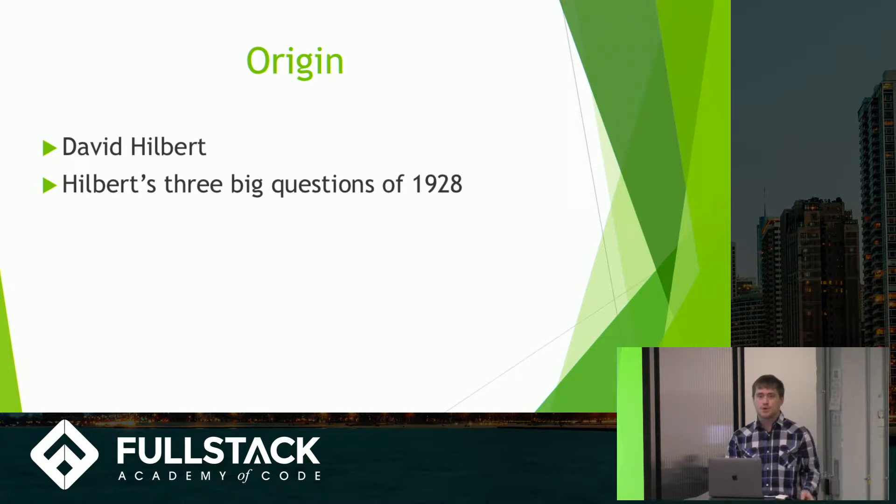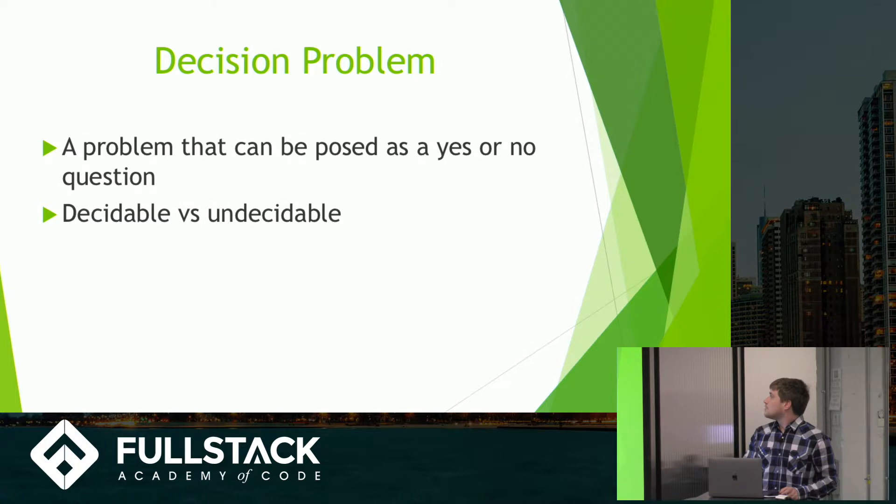And once he asked this problem, a bunch of mathematicians basically started to try and make tools that could solve this problem. So what is a decision problem? A decision problem is basically a problem that takes in inputs and then either responds with yes or no. And it's as simple as that. And if it can always respond yes or no, then it is considered decidable.